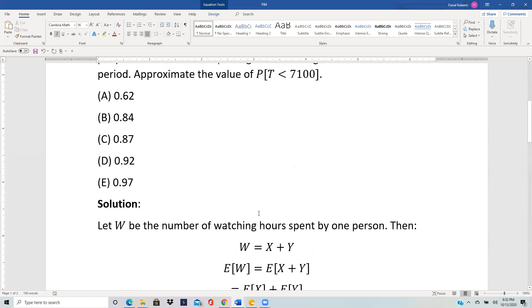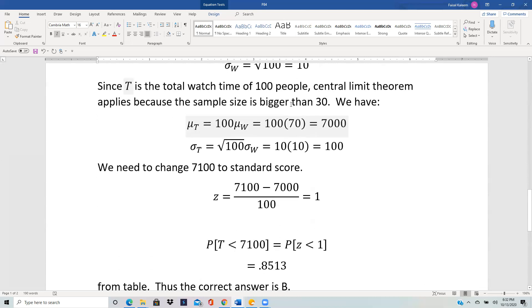We need P of T less than 7100. First, we need to change 7100 into a Z-score. That'd be 7100 minus the mean divided by the standard deviation, so that's one.